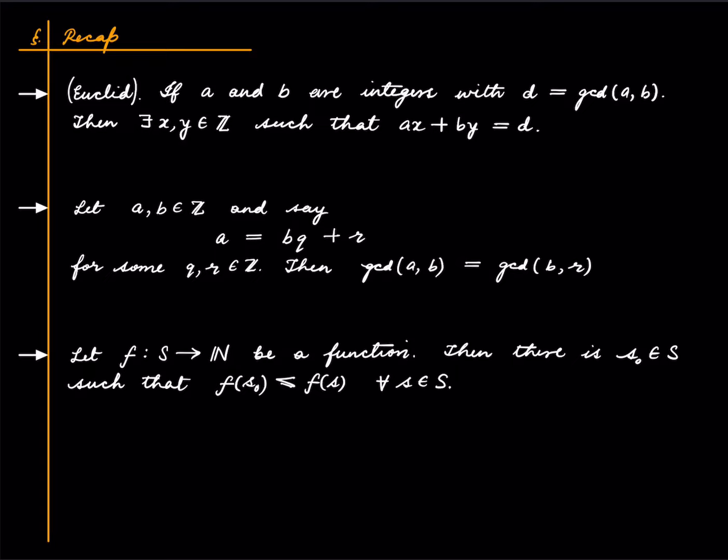Let us recall a simple fact that we showed a couple of lectures ago: if we have two integers, again not both zero, and say that A equals BQ plus R for some integers Q and R, then GCD of A comma B is GCD of B comma R. So we showed this earlier and we'll use this today.